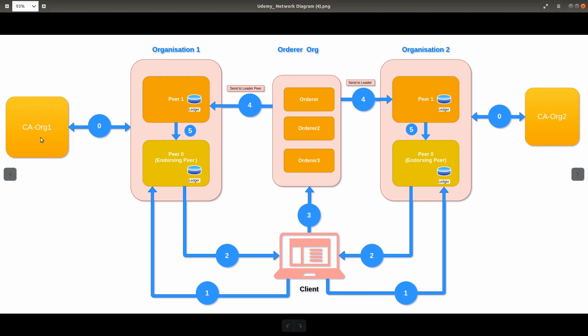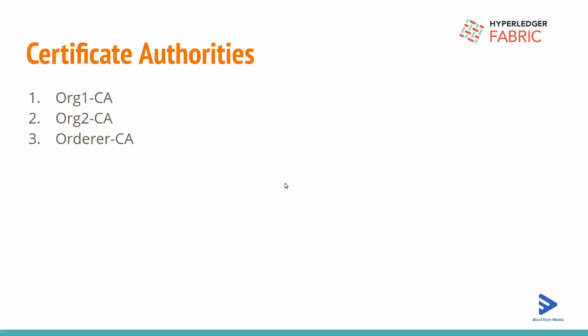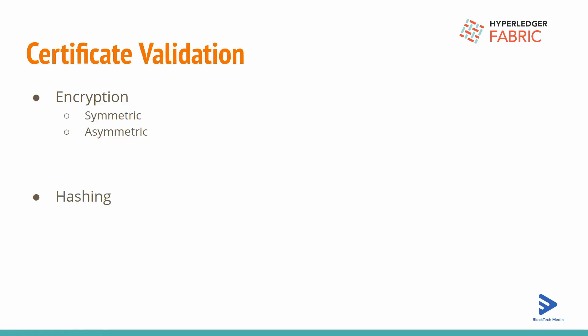Previously we used Certificate Authority Org1 and Certificate Authority Org2 for the two peer organizations. After bootstrapping the network we used the Certificate Authority to register and enroll new users, but we bootstrapped our network using certificates created by cryptogen tool. Right now we will have three Certificate Authorities in total: CA Org1, CA Org2, and the Orderer Certificate Authority.